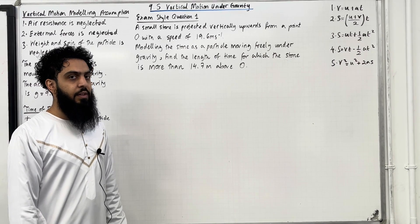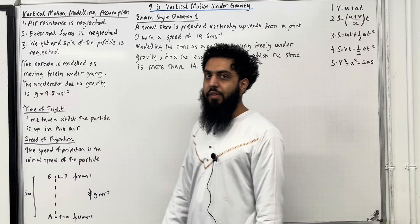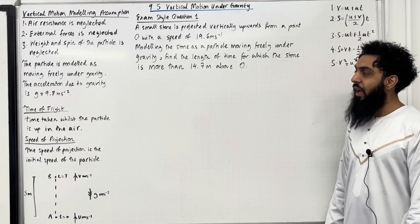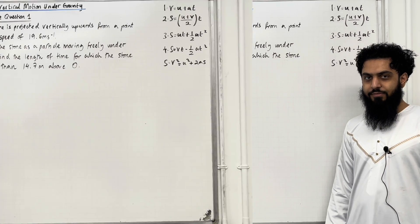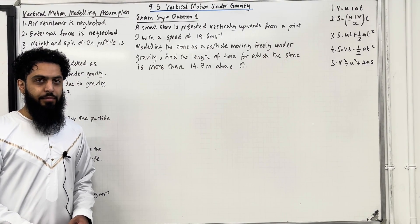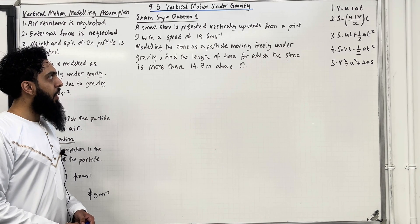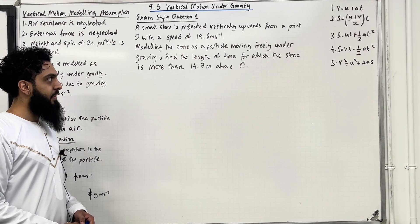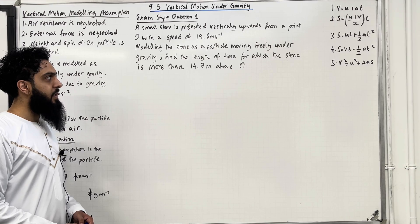These formulas will be given in the formula booklet. These are the key facts of 9.5 vertical motion under gravity. I'll be implementing these key facts within three exam style questions. Let's have a look at exam style question 1. A small stone is projected vertically upwards from a point O with a speed of 19.6 metres per second. Modelling the stone as a particle moving freely under gravity, find the length of time for which the stone is more than 14.7 metres above O.